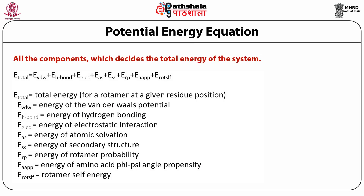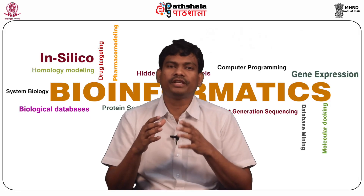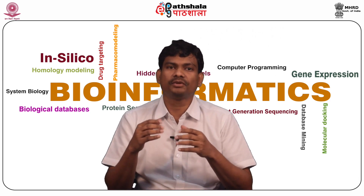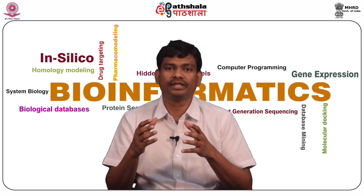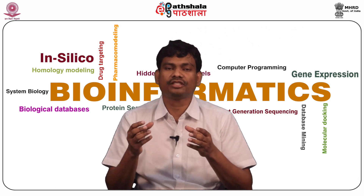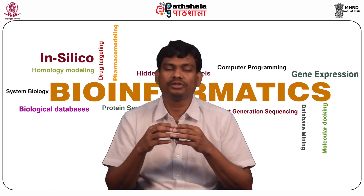The potential energy equation used in computational programs includes different energetic terms: the total energy of the system equals the sum of van der Waals, hydrogen bonding, electrostatic, hydrophobic, and rotamer terms. All these terms are included to calculate the energy of a particular protein or protein design. Computational programs use different combinations and permutations of amino acids and their rotamers to design a protein.